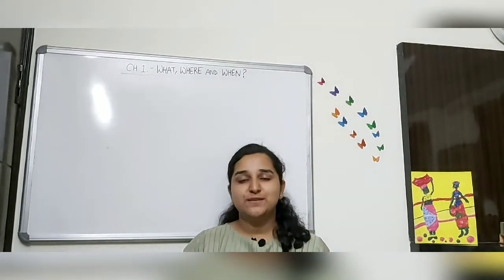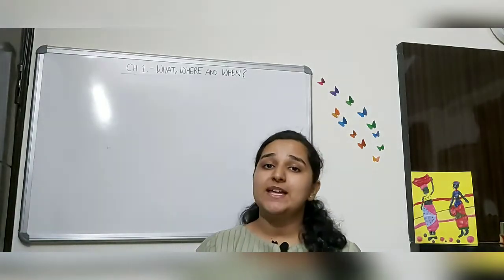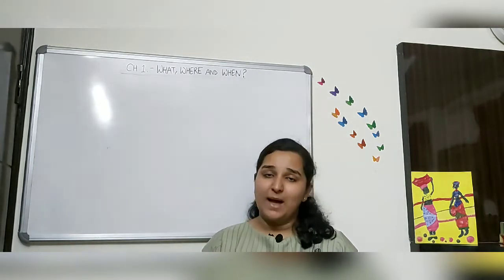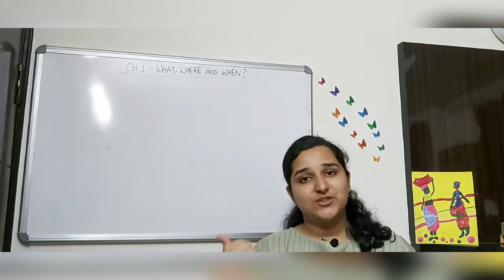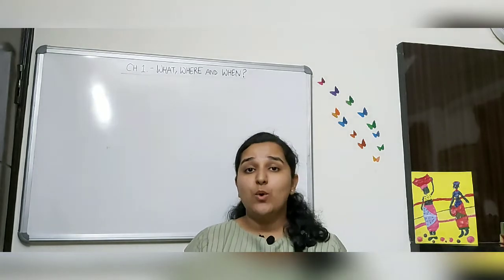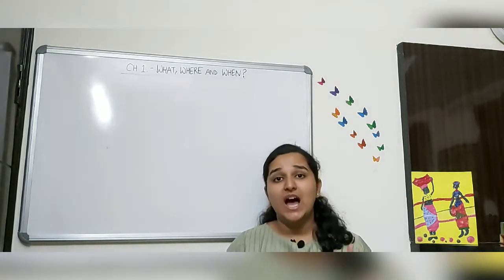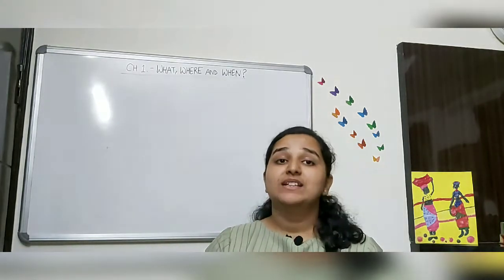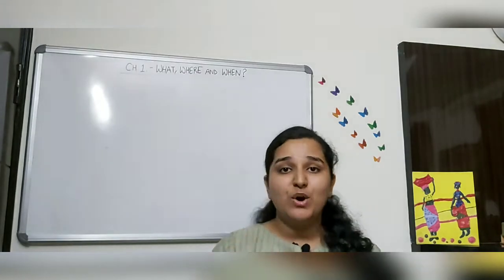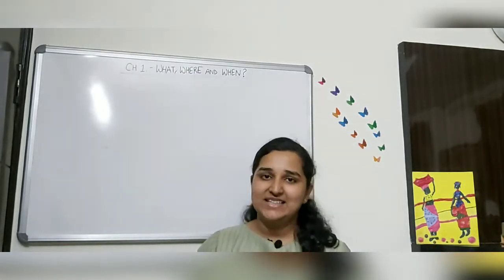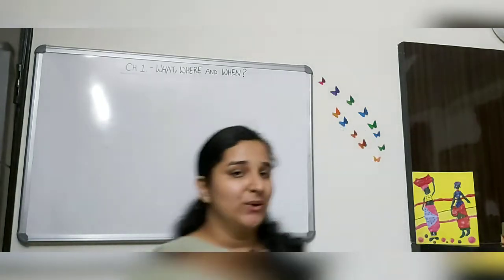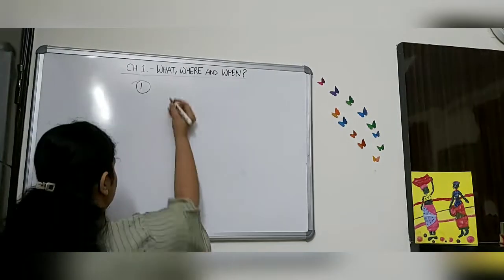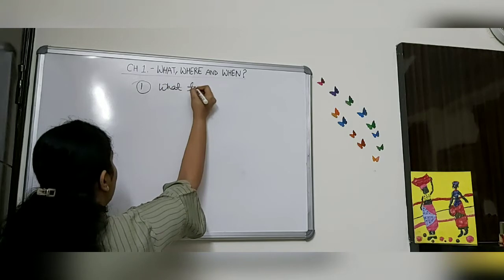The title of our chapter is 'What, Where and When.' The first question we are going to address is: what exactly can we know about our past? I hope you all have your notebooks and pens ready so you can take down notes. Number one question: what can we know about the past?